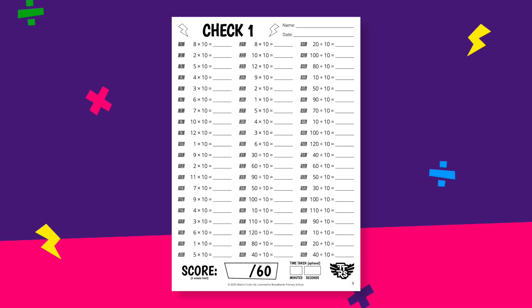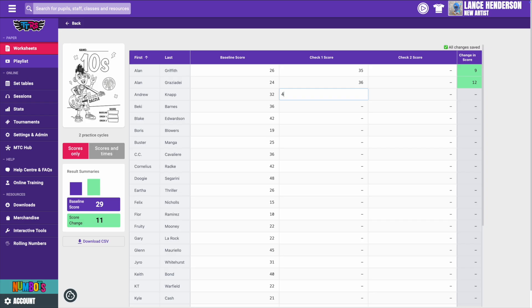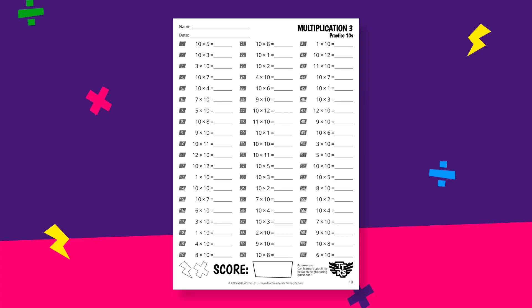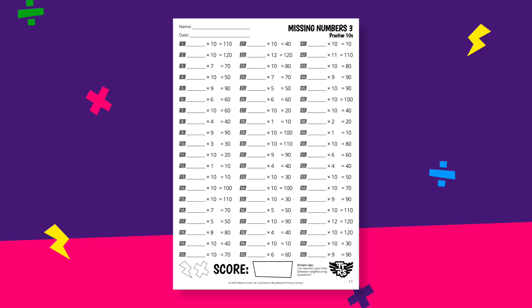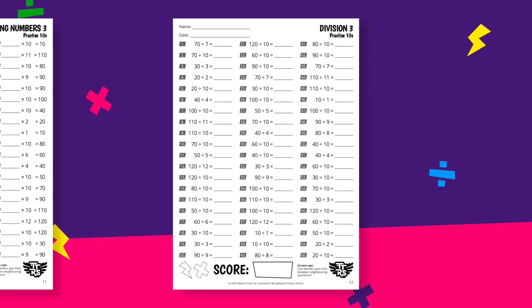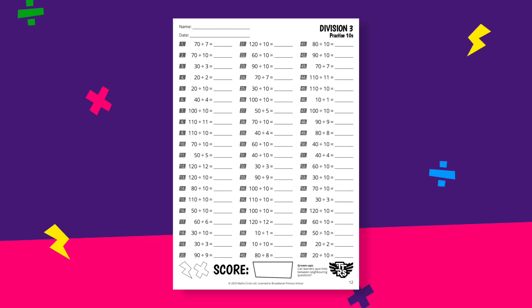In the middle of the pack is check one. This is a great point to recognise the progress that's already being made. You can again record the results using the Enter Data button. After check one, multiplication and division are revisited. Again, the format of the questions is varied, ensuring children build a broader understanding of inverse operations and commutativity.